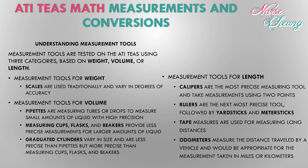For length, calipers are used for precise measuring using two points. Rulers are the next most precise tool, followed by yardsticks and meter sticks. Tape measures are used for measuring long distances, and odometers measure the distance traveled by a vehicle, appropriate for miles or kilometers. These are basic measurement tools you need to understand — they're not huge questions on the ATITs, but you will most likely see a question on this.